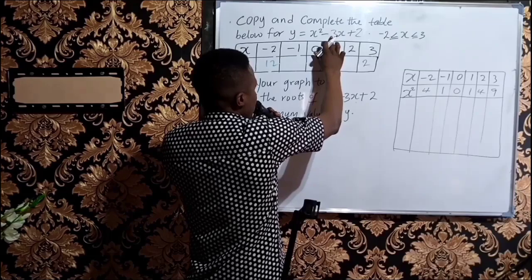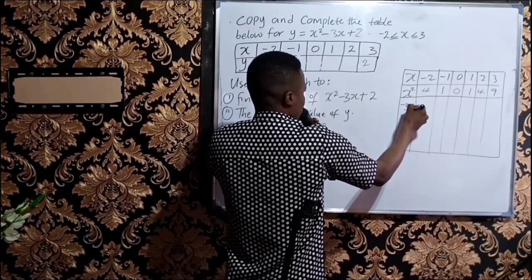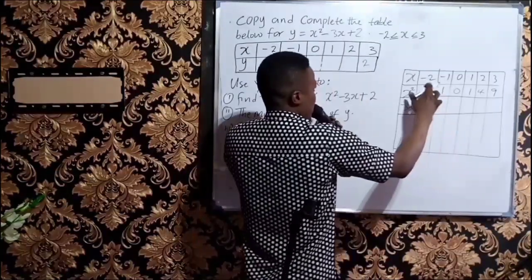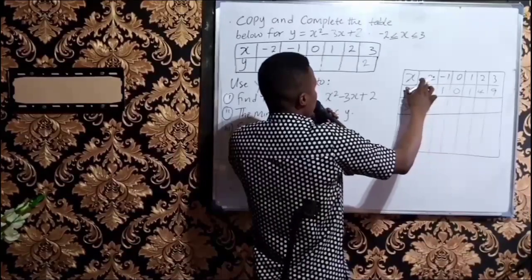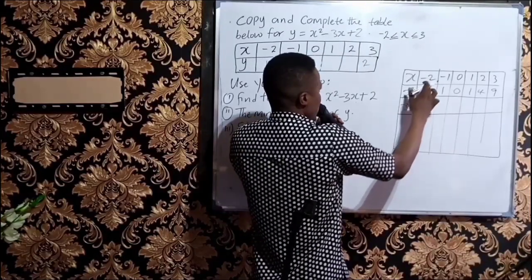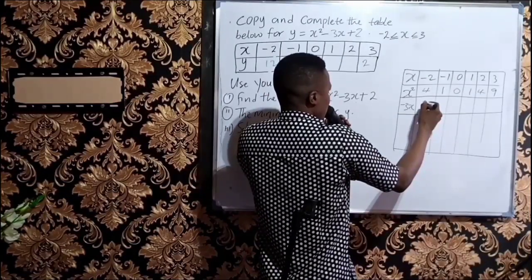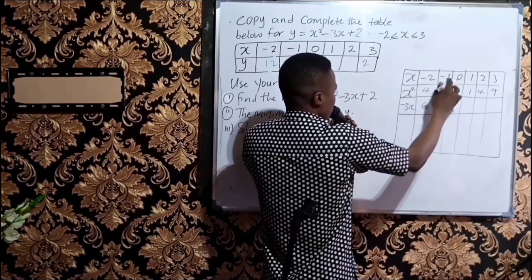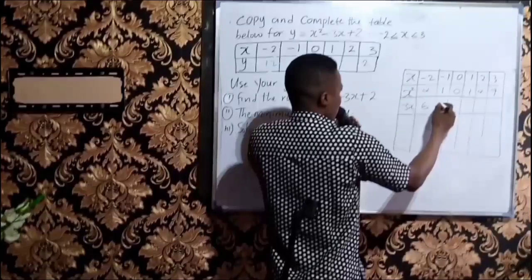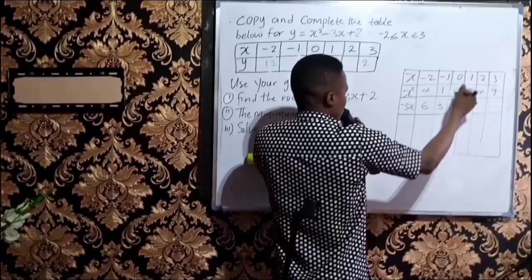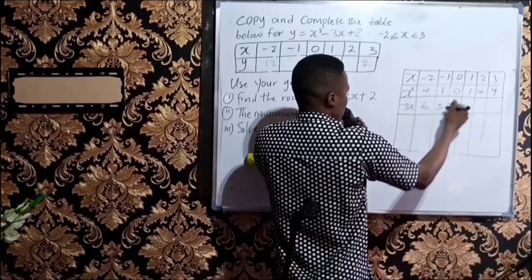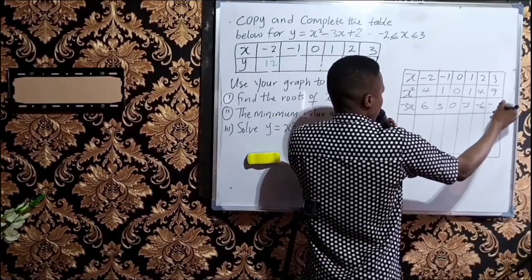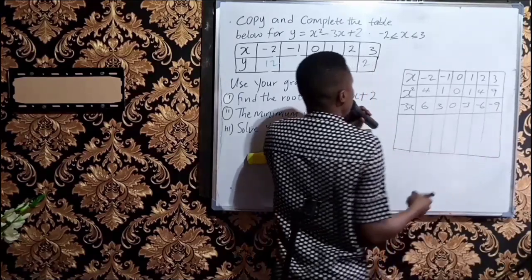The next row is minus 3x, which means you are multiplying the values of x by minus 3. So: minus 3 times minus 2 is 6, minus 3 times minus 1 is 3, minus 3 times 0 is 0, then minus 3, minus 6, and minus 9.